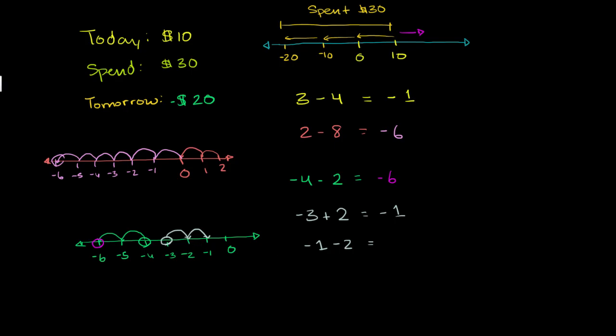And we see that happens. If you start at negative 1, right over here, and you subtract 2, you move 2 to the left, you get back to negative 3.